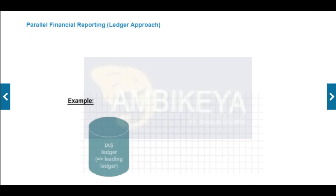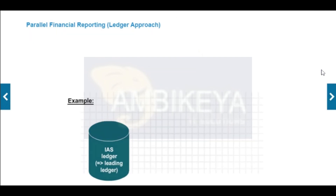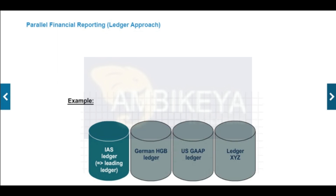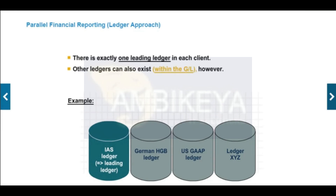As of SAP ERP, new general ledger accounting is available. It allows you, within general ledger accounting, to manage multiple general ledgers in parallel and in this way create different financial statements. In new general ledger accounting, one ledger has the role of leading ledger. However, you can still manage accounts in parallel using the accounts approach despite new general ledger accounting, in which case there is only exactly one ledger — the leading ledger.